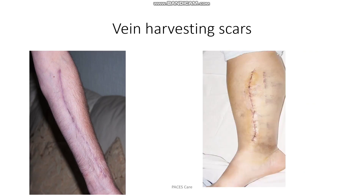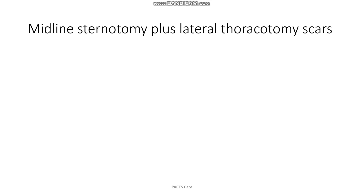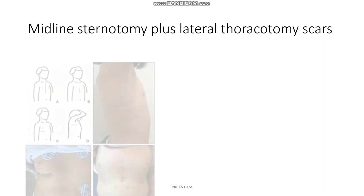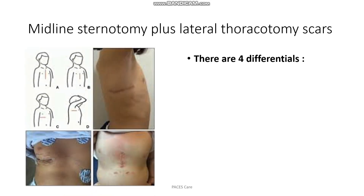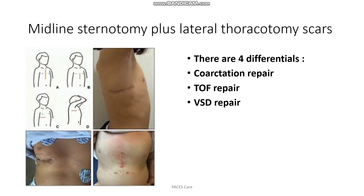These are the scars that we can find in the vein harvesting scar in the leg. Now, if you find a midline sternotomy plus a lateral thoracotomy scar, don't get puzzled — there are four differentials: it could be coarctation repair, top repair, VSD repair, or metallic valve replacement with a previous bioprosthetic valve.